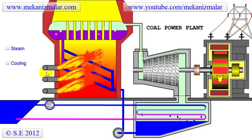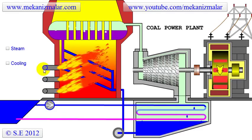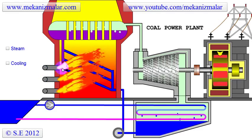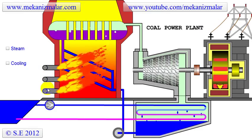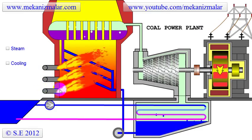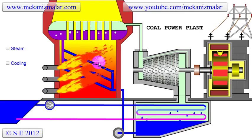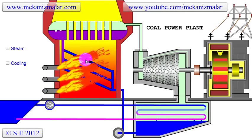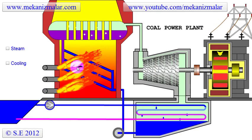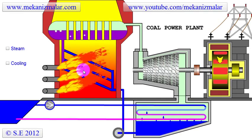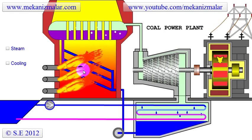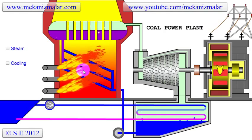To increase burning efficiency, a powdered coal and air mixture enters the furnace. During the burning process, the chemical energy stored in the coal is released as heat to create high temperatures inside the furnace.